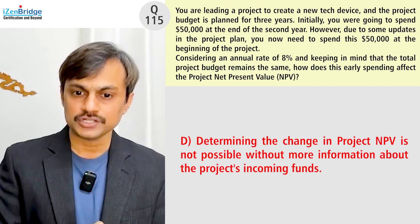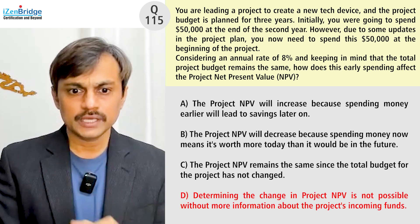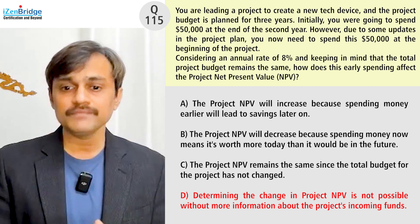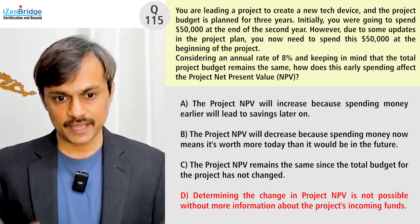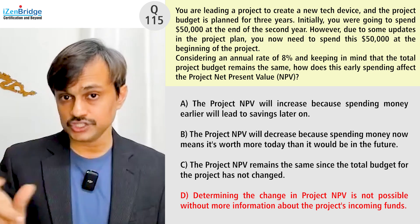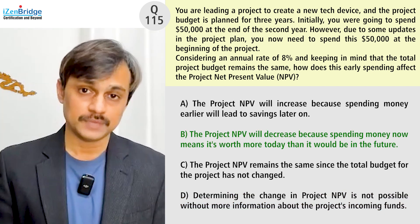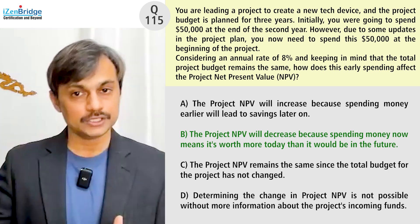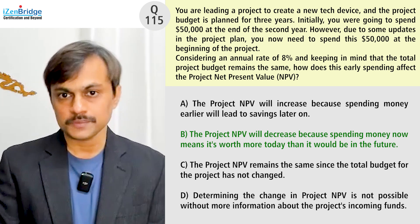Option D: determining the change in project NPV is not possible without more information about the project's incoming funds. That's true — if someone asks me to calculate the net present value, I can't because I don't know the incomes. But I know the impact: if other parameters remain unchanged and this one is changing, it will decrease my NPV. So though option D is true, option B is more appropriate because it maps directly to the impact of spending the money now versus after two years on the NPV.